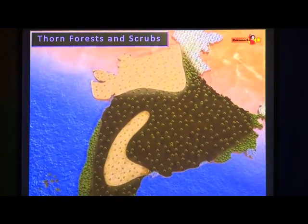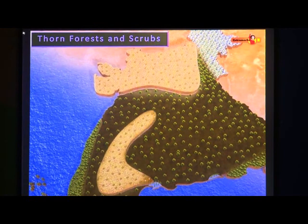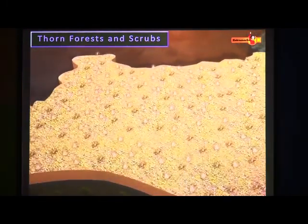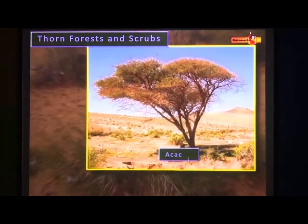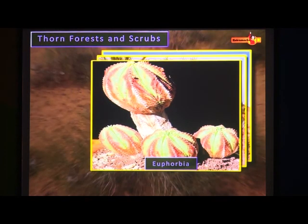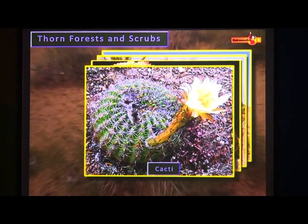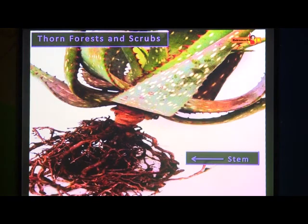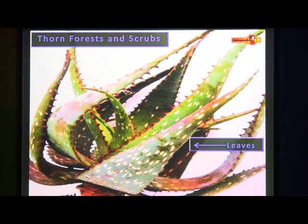Thorn forests and scrubs. This type of vegetation is found in the semi-arid areas of Gujarat, Rajasthan, Madhya Pradesh, Uttar Pradesh and Haryana. The natural vegetation consists of thorny trees and bushes like acacia, palm, euphorbia and cacti. Trees are scattered and have long roots penetrating deep into the soil in order to get moisture. The stems are succulent enabling the conservation of moisture. Leaves are mostly thick and small to minimize the loss of moisture through evaporation.